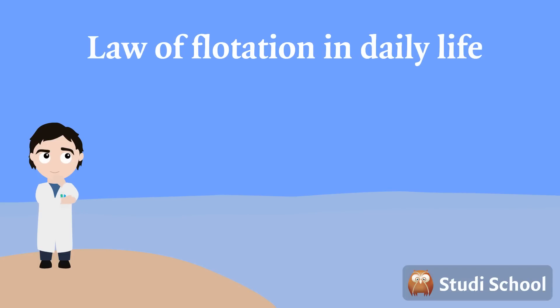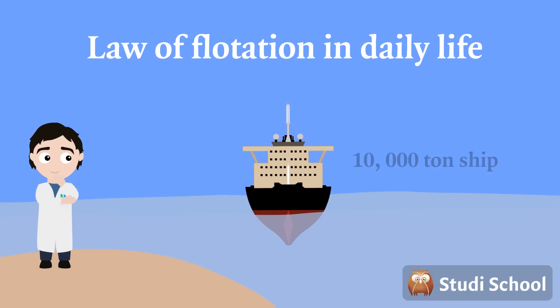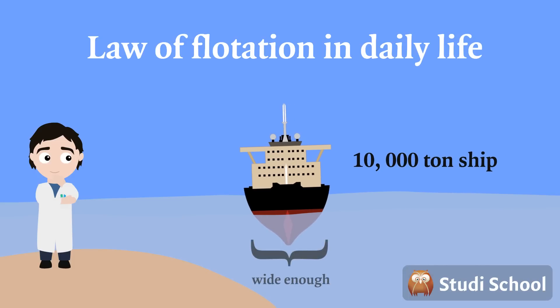Ever wondered why ships and submarines can float when they are so large? As we know from the law of flotation, an object must displace a weight of the fluid equal to its own weight in order to float. So, a 10,000-ton ship must be built wide enough to displace 10,000 tons of water to stop it from sinking.